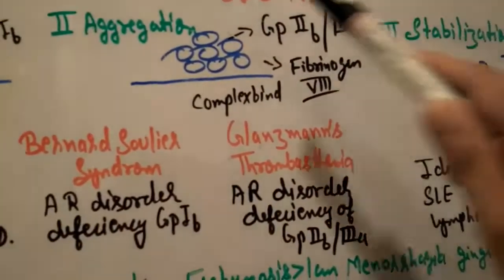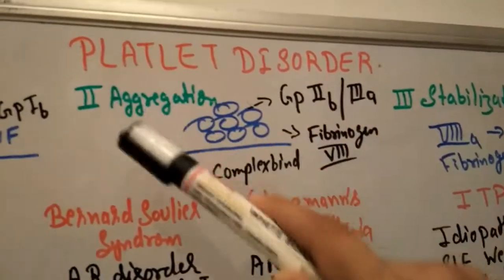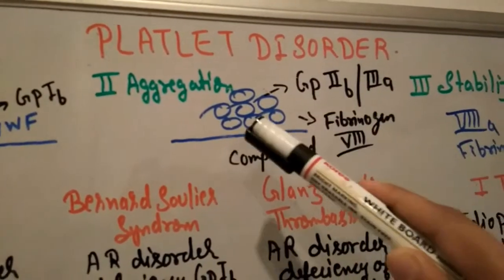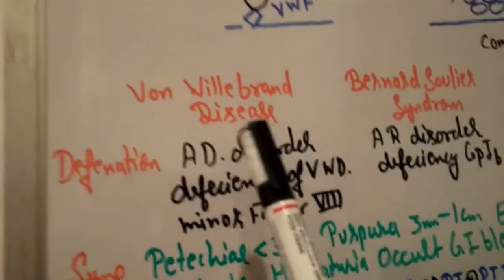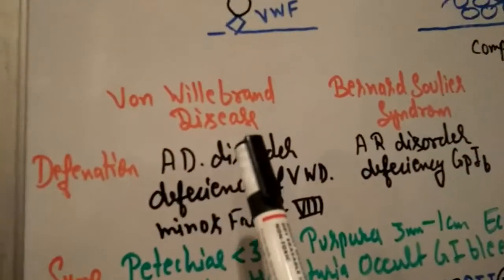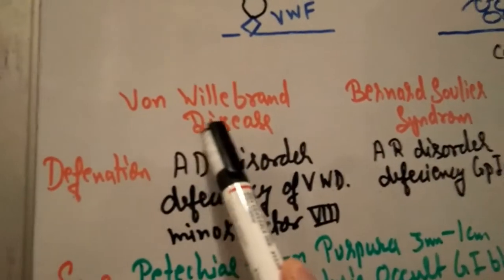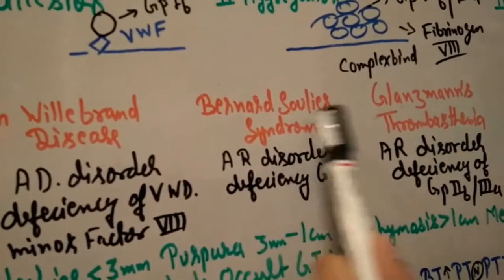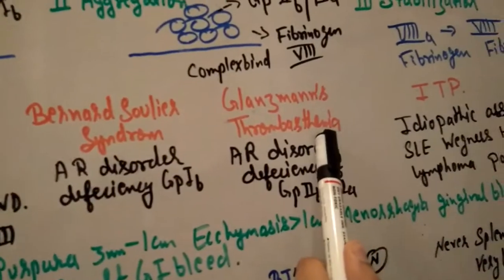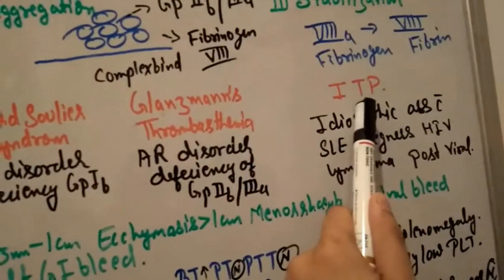If there is a defect in platelet aggregation, then there are disorders. We can categorize many, but I'm going to explain the most important topics: von Willebrand disease, Bernard-Soulier syndrome, Glanzmann thrombasthenia, and ITP.